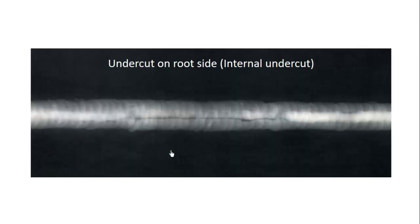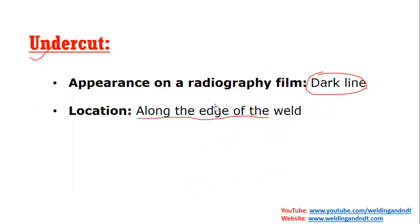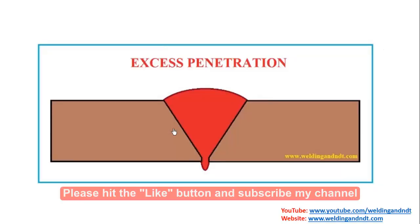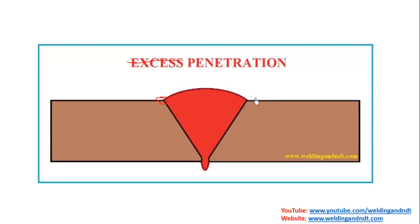Undercut can be formed on the external side as well as the internal side. The undercut formed on the front side of the welding is known as external undercut — it can form either side of the weld face. But if the undercut is formed on the root side, on the back side of the welding, then it is known as internal undercut. Internal undercut will appear at the edge of the root run.